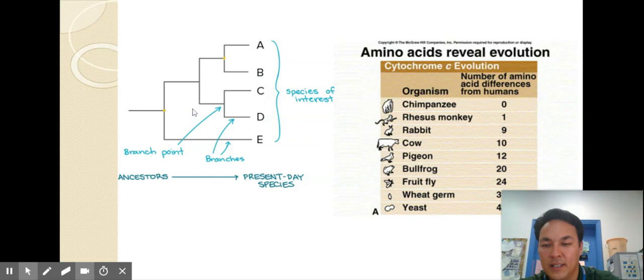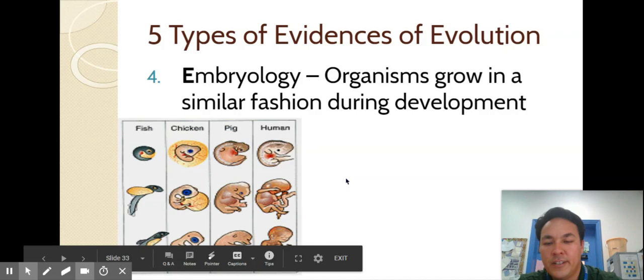All right we have embryology so I'm seeing some conserved genes here for as organisms develop in utero. The more similar looking the embryos usually the more closely related they are in the tree of life.